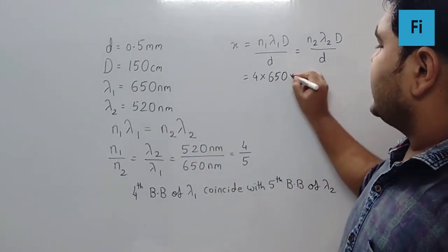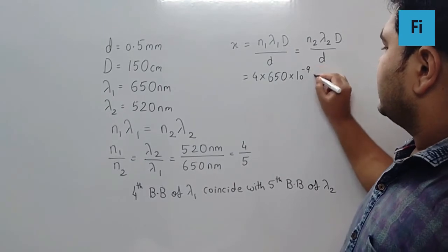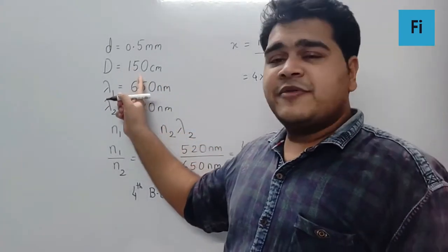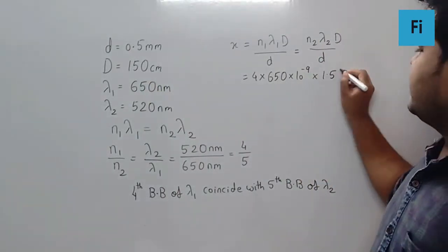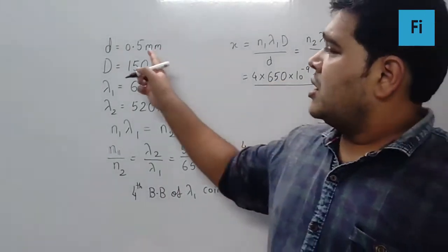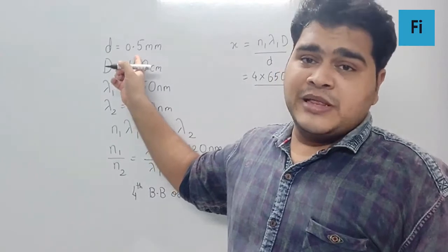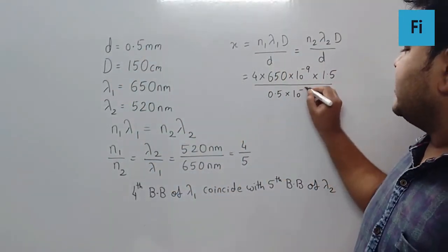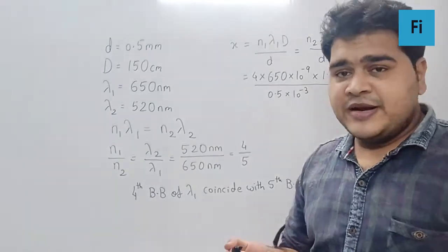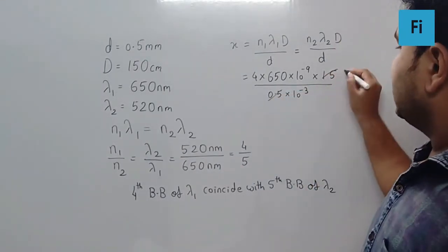Lambda 1 is 650 nm, so 650 times 10 raise to minus 9. Capital D is 150 cm, which is 1.5 m. So 1.5 upon the small d which is 0.5 mm. So I can write 0.5 times 10 raise to minus 3. So definitely, this will become 0.5 cubed, 1.5.